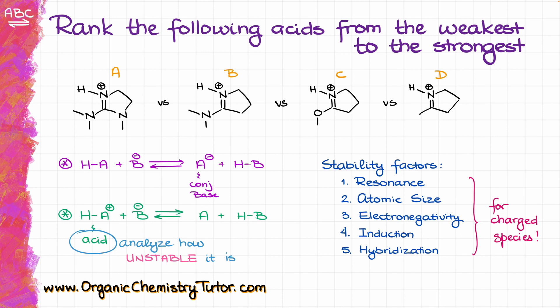In that case we are going to be looking at the stability of the acid itself — specifically how unstable the acid is. In the first case, the more stable the conjugate base, the more acidic the acid that produced it. Here, the more unstable the acid is, the more acidic it is, because it's more likely to lose a proton to stabilize itself and become a neutral species. That's exactly the situation in this question.